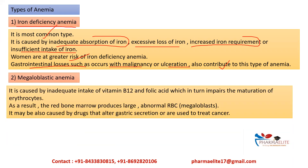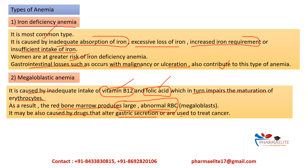The next type is megaloblastic anemia, caused by inadequate intake of vitamin B12 (cyanocobalamin) and folic acid (vitamin B9), which impairs the maturation of erythrocytes. These vitamins are very important during erythropoiesis — the formation of RBCs. If they are in inadequate amounts, the red bone marrow produces large, abnormal RBCs called megaloblasts. It may also be caused by drugs that alter gastric secretion or are used to treat cancer.